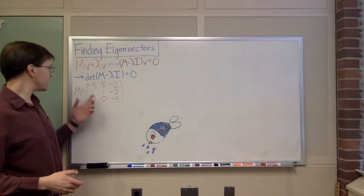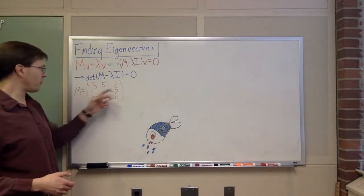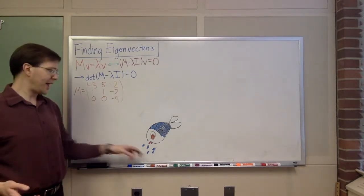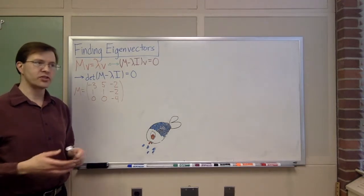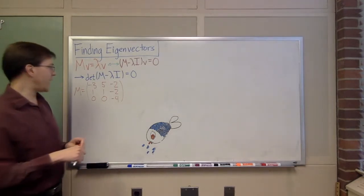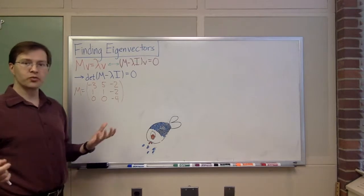So here's my matrix: -3, 5, -2, 1, 1, -2, 0, 0, -4. And I want to find its eigenvalues and the associated eigenvectors. So to do that, what do I do? Well, my usual thing, I'm going to find the matrix M minus lambda I.